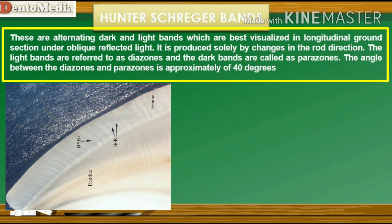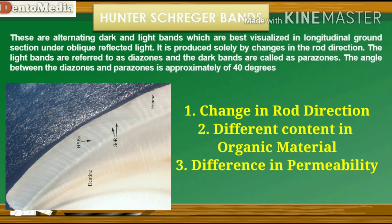A number of possible explanations are given for the appearance of these bands. Most workers consider that these bands occur due to change in the direction of rods — one group of rods extends toward the surface with a mesial drift while the adjacent group might show a distal drift. According to some workers, they are composed of a slightly different content of organic material. They may also occur due to differences in permeability.